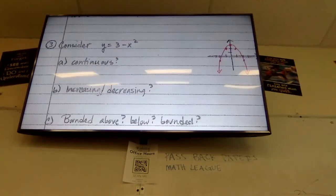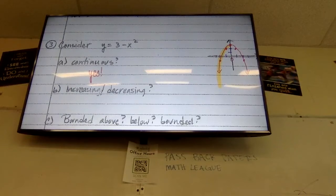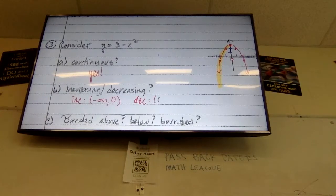Is this continuous? Yes. Is it increasing? It's increasing from the very beginning all the way to zero on the x-axis. I only care about my zeros here. You might be tempted to say it's increasing from negative infinity to three, but I only care about my x's. So it's increasing from negative infinity to zero, and then decreasing from zero to positive infinity.